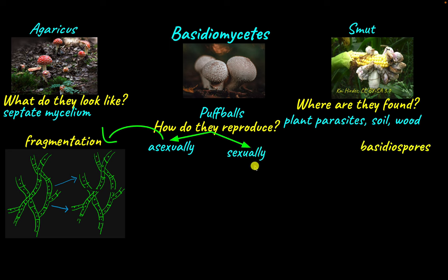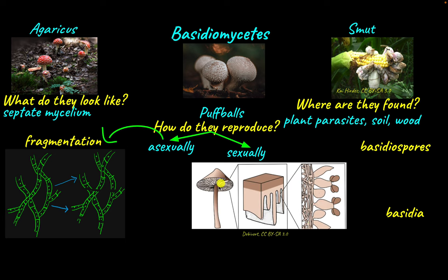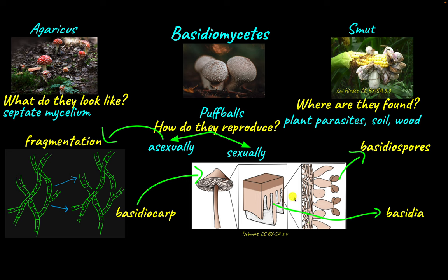Sexual reproduction in Basidiomycetes is through basidiospores. Basidiospores are formed exogenously on structures called basidia. The entire structure is called the basidiocarp, within which there are finger-like projections — the basidia (singular: basidium). Exogenously on the basidium, four haploid basidiospores are formed. So the basidiocarp is the fruiting body for Basidiomycetes, just as ascocarps are the fruiting body for Ascomycetes.